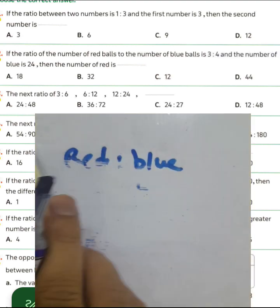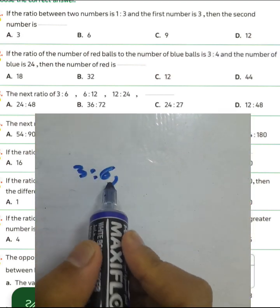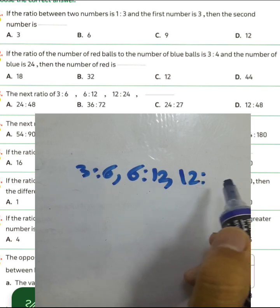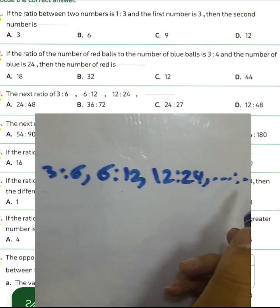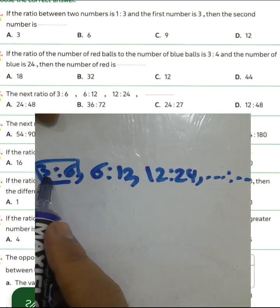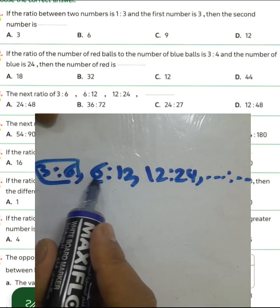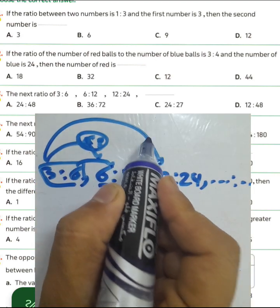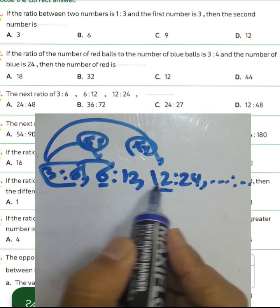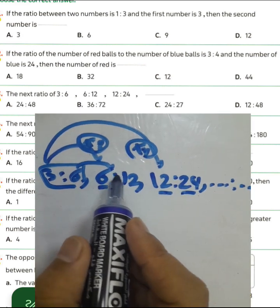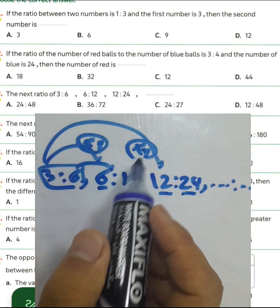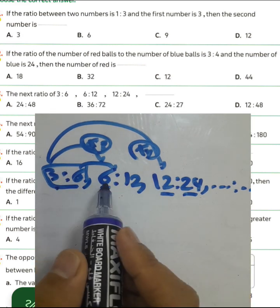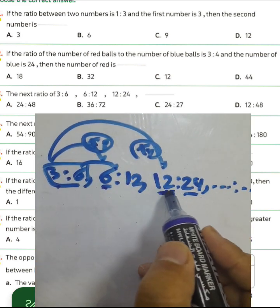Question number three: complete the next ratio — three to six, six to twelve, twelve to 24, then space to space. We have three over six, multiplied by two. Three times two equals six, multiplied by two here; six times two equals 12; three multiplied by four equals 12; multiplied by eight gives 24. Or write the double of each number: three, six, 12 — twice of 12 is 24.